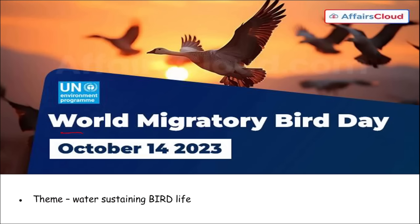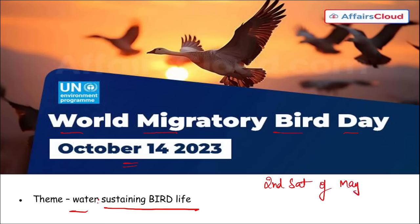Next, important days. World Migratory Bird Day is observed on 14th October, with the theme 'Water: Sustaining Bird Life.' This day is celebrated across the globe. Generally it is observed on the 2nd Saturday of May and October — so it is observed twice a year. It is to raise awareness about the importance of migratory birds, their ecological role, and the need for international cooperation to protect them. In 2023 it was on 13th May and 14th October.